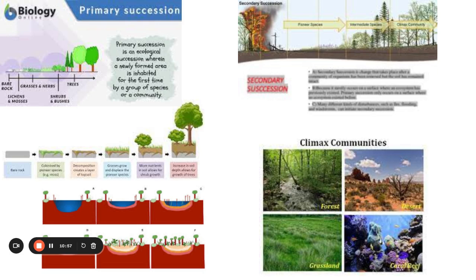And then secondary succession starts with a climax community that is disturbed, probably some natural disaster, or it could even be human, man-made.